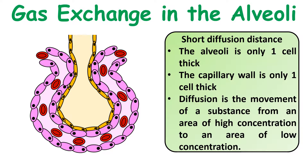The next thing to think about is that the physical distance between the air coming in and leaving the alveoli and the bloodstream is very very short — this is a short diffusion distance. This is because the alveoli wall is only one cell thick, and the walls of the capillary going around it are also only one cell thick, so the total diffusion distance from the air into the blood is only about two cells. Remember: the shorter the diffusion distance, the greater the rate of diffusion. It's also worth noting that diffusion is the passive movement — it doesn't require any energy — of a substance from an area of high concentration to an area of lower concentration.